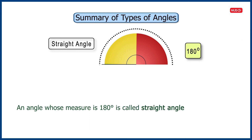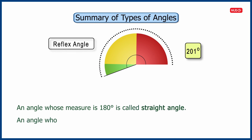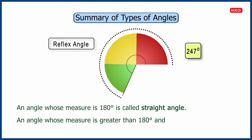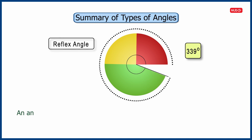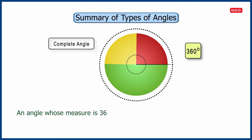An angle whose measure is greater than 180 degrees and less than 360 degrees is called a reflex angle. An angle whose measure is 360 degrees is called a complete angle.